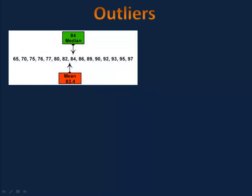Next, let's talk about outliers. Here we have a set of test scores. Almost the same test scores that we saw in the beginning, except we start at 65 instead of 0. We see that we have a median of 84 and a mean of 83. But what happens if we change that 65 to a 0?